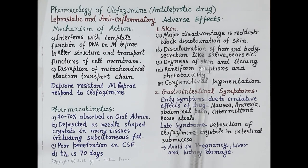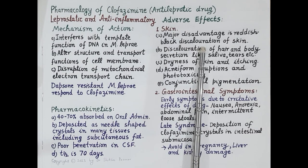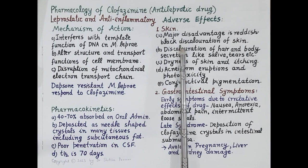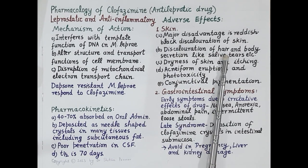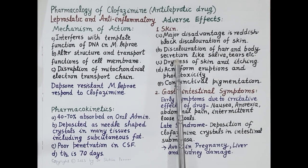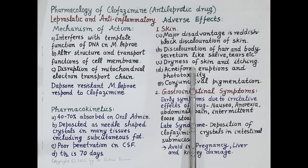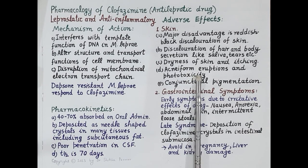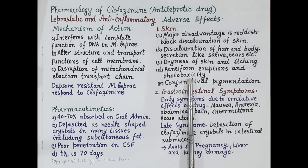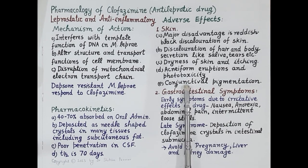Adverse effects of clofazimine: it causes reddish-black discoloration of the skin, especially on exposed body surfaces like the face and hands. It can also cause discoloration of hair and body secretions like saliva and tears. Another problem is dryness of skin, which leads to itching. It can also cause acneform eruptions — acne-like bumps on the face, chest, and other parts of the body — as well as phototoxicity and pigmentation of the conjunctiva of the eye.